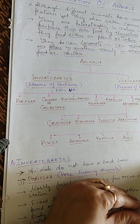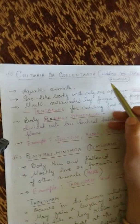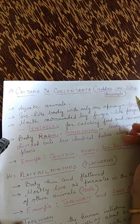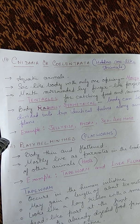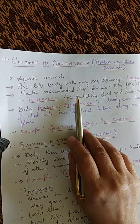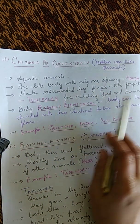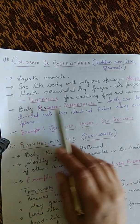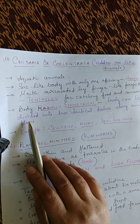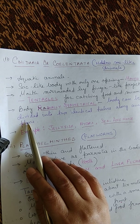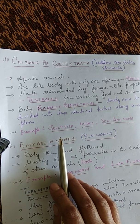The second phylum is Cnidaria or Coelenterata, meaning hollow sac-like animals. They are aquatic animals with a sac-like body having only one opening — the mouth — surrounded by finger-like projections called tentacles for catching food and swimming. Their body is radially symmetrical and can be divided into two identical halves along any plane. Examples: jellyfish, hydra, sea anemone.